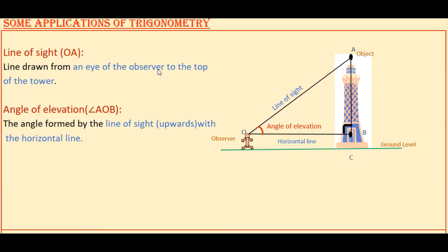The line drawn from the eye of the observer to the top of the tower, OA, is called line of sight. If you draw a horizontal line from the observer's eye to the tower, OB, this is the horizontal distance between the observer and the tower. The angle formed by the horizontal line to the line of sight is called angle of elevation. So the angle formed by the line of sight upwards with the horizontal — here angle AOB — is the angle of elevation.